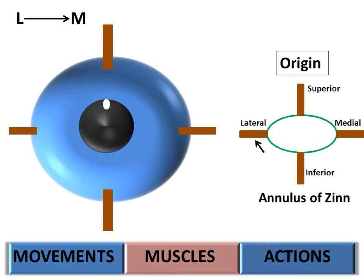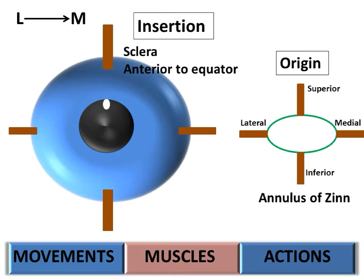These muscles insert into the sclera of the eyeball just anterior to the equator, respectively into the superior, medial, inferior, and lateral aspects.